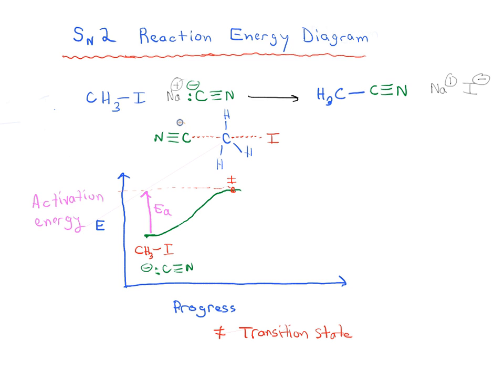And we shouldn't forget that there is a partial negative charge on the carbon of the cyanide ion, and a partial negative charge on the iodine. And there's a partial positive charge on our carbon.